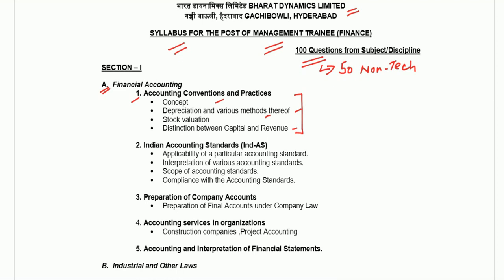In the second part they are asking about Ind AS — in that they want you to know applicability of Ind AS, interpretation of various accounting standards, scope and compliance with the accounting standard. And part 3 is related to preparation of company accounts. So basically schedule 3 company final accounts — you should be aware of how to prepare the company final account.